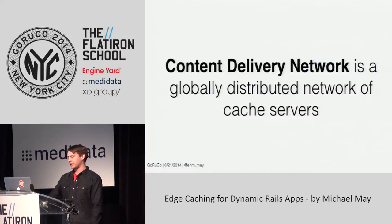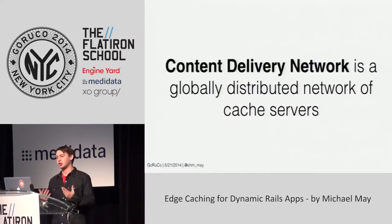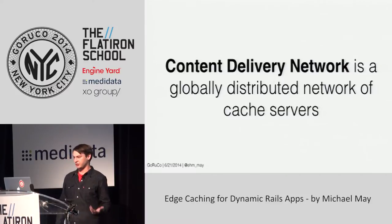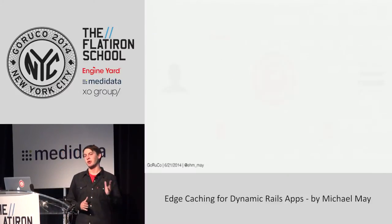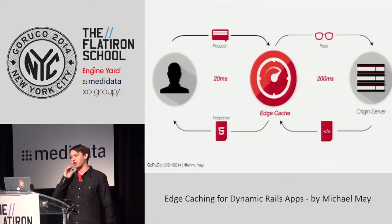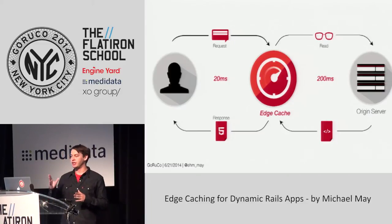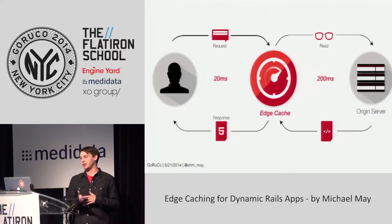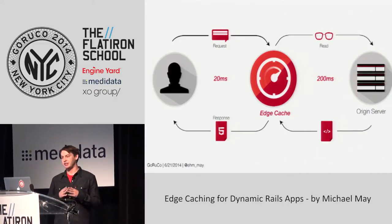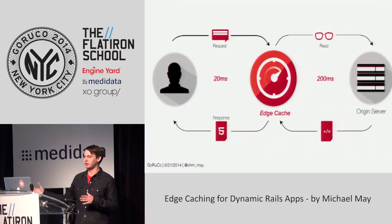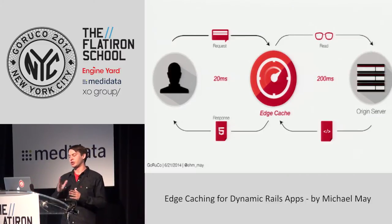A content delivery network is a globally distributed network of cache servers. When people request data, those requests are routed to edge caches. If the data lives in the cache, that request will be immediately returned to the user. Otherwise, the cache will go out to your origin server, fetch that data, store it in the cache, and then pass it back to the user.